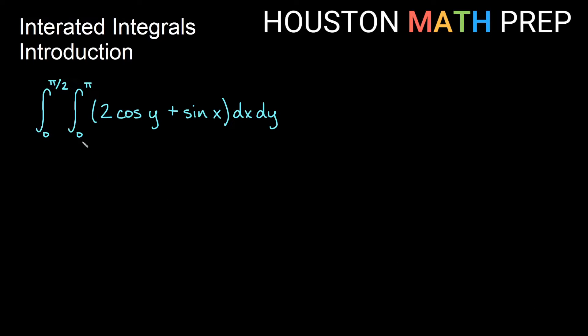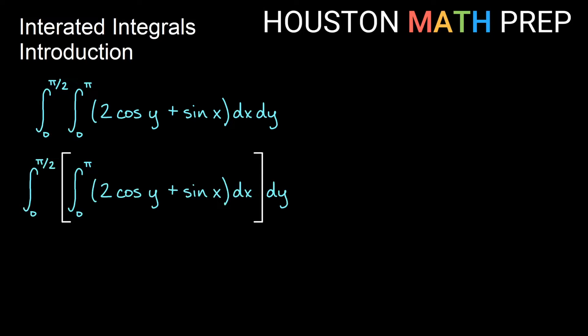Here we have a double integral — you can see we have two integral signs. We have bounds on each, so this is a definite double integral. We have our function inside and we have dx dy. When we iterate a multiple integral, we work from the inside out. So this expression, the double integral of 2 cosine y plus sine x dx dy, is to be done first with the inside integral — integrating dx, in other words treating y as a constant.